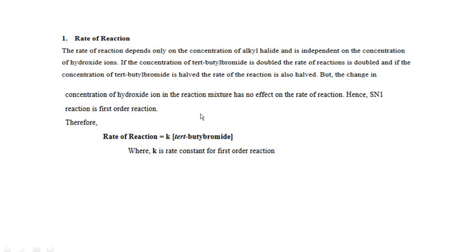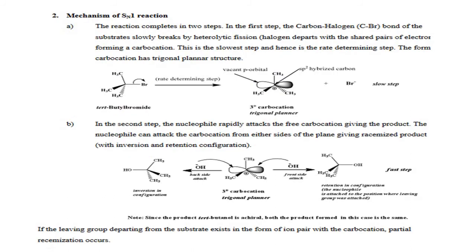If we double the concentration of tertiary butyl bromide, then the rate of reaction also doubles. But if we halve the concentration of tertiary butyl bromide, then the rate of reaction is also halved. So the rate of reaction depends only on one molecule; it is known as a unimolecular reaction. It is also known as a first order reaction, where the rate depends on the concentration of one reactant molecule. Here k is the rate constant for the first order reaction, and this is the rate of reaction of the nucleophilic substitution reaction.